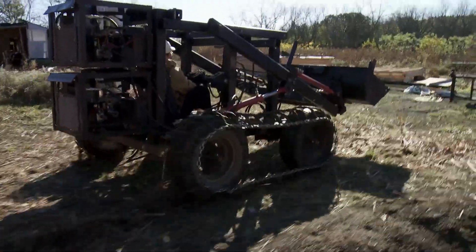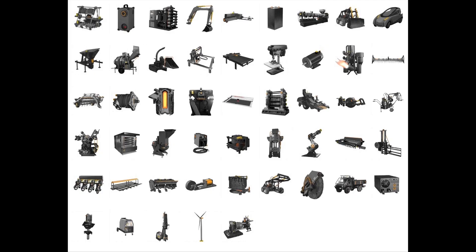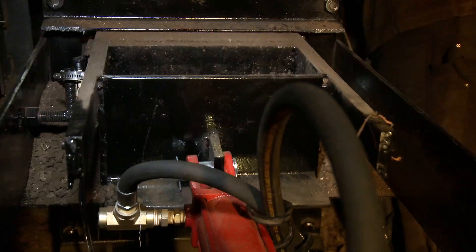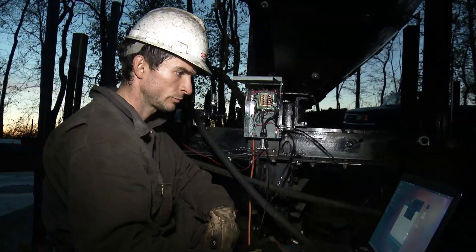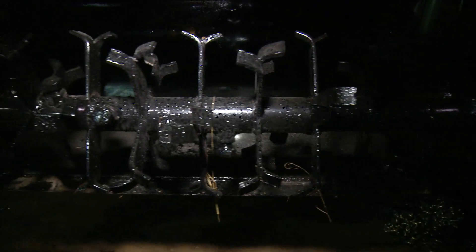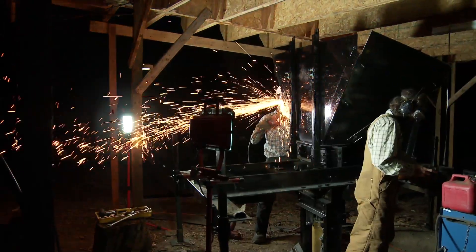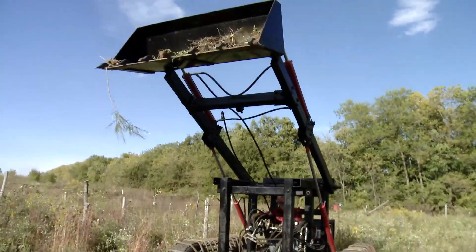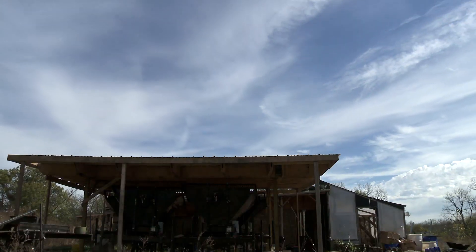The Global Village Construction Set is a set of 50 different industrial machines that allow for the easy fabrication of all the different products that it takes to create a small civilization with modern comforts — everything from a tractor to an oven to a circuit maker.